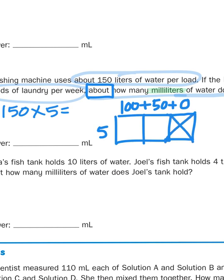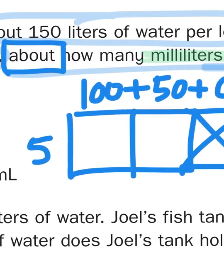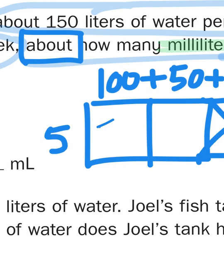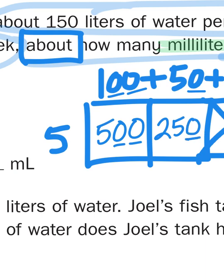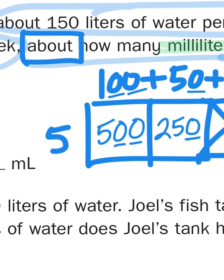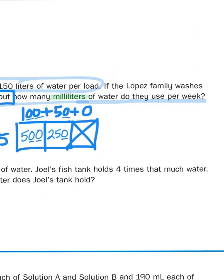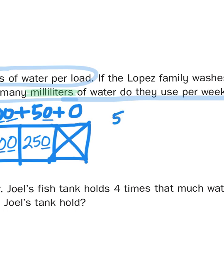All I have to do here is multiply 5 times 100 and then 5 times 50. 5 times 1 is 5. When I multiply 5 times 1 with two 0s, it's going to give me 5 with two 0s, 500. Now I'm going to do the same thing with the 50. 5 times 5 is 25. 5 times 5 tens is going to give me 25 tens, otherwise known as 250. I can take those two partial products, 500 and 250, add them together, and that's going to give me 750. That's 750 liters per week.